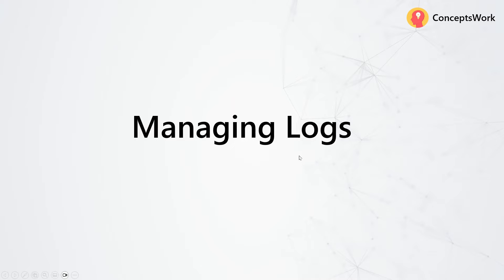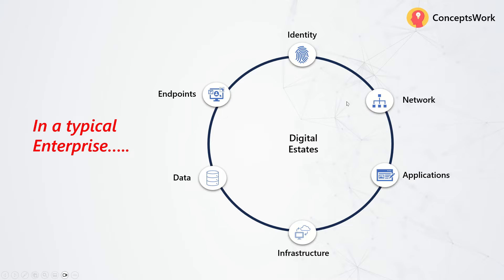In a typical enterprise you have multiple digital states, and for each digital state you will have some kind of solutions. For identity you have Active Directory; for network you have hardware devices, routers, switches, firewalls, or proxies; applications can be any software or solution used in your enterprise; from an infrastructure perspective you can have multiple cloud providers or your on-prem data center; for data you have on-prem file servers, Microsoft OneDrive, or Google Drive; and from an endpoint perspective you have MDM solutions.